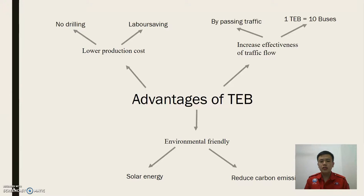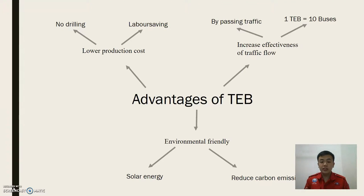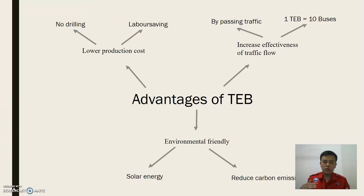There are three main advantages of this T-E-B. Firstly, it has a lower production cost. T-E-B has the same function as a subway; however, there is no underground drilling needed for this T-E-B. T-E-B simply needs a path or track to be installed at both sides of the road, which acts as a path for the T-E-B. This is much more cost-saving compared to the typical subway, which requires underground drilling.